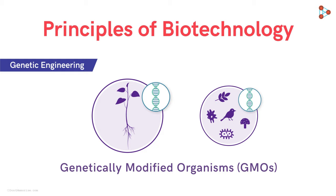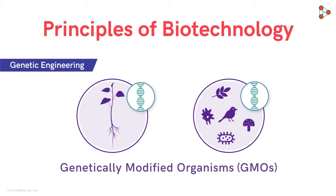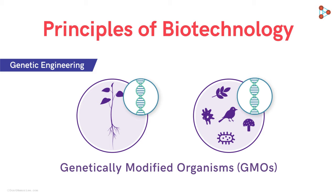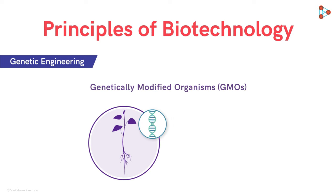Almost all living organisms can be modified with the help of genetic engineering. Modifications in organisms can give rise to beneficial products. Consider plants for example. With the help of genetic engineering, we can produce robust crops, pest-resistant varieties, and also high-yielding varieties of many crops.